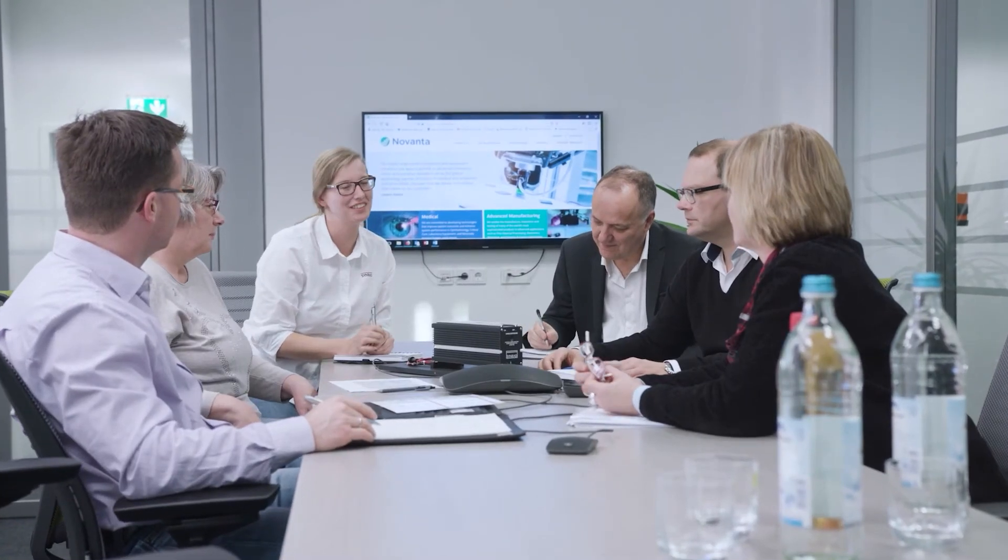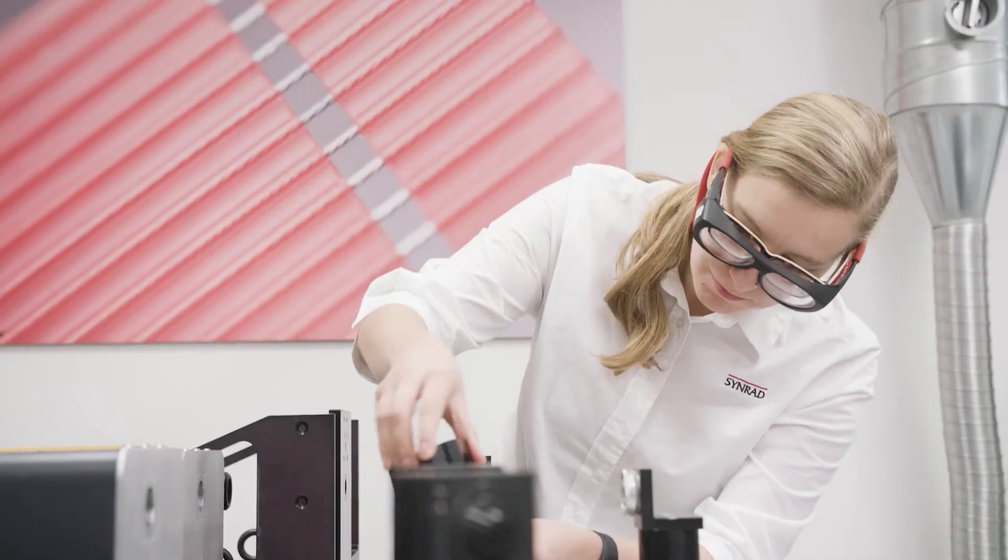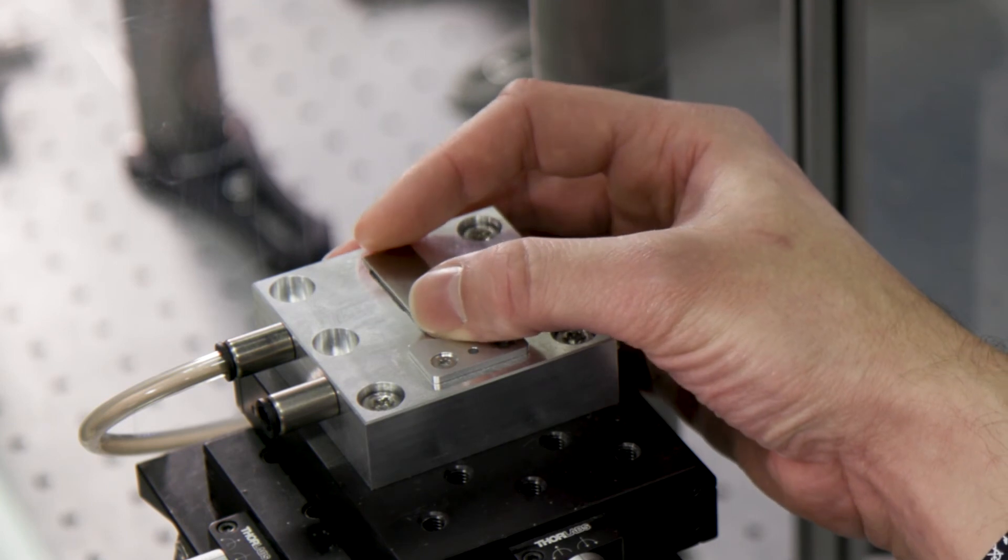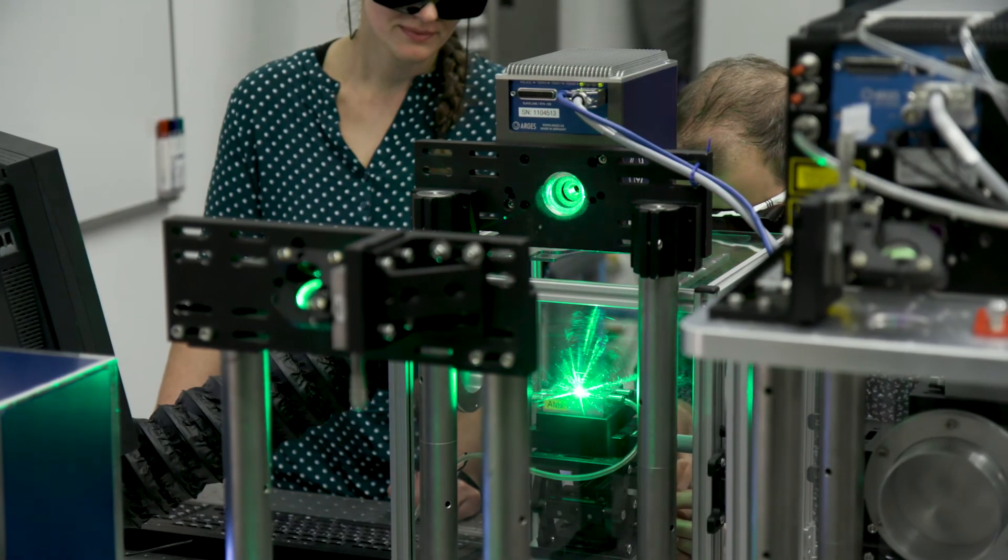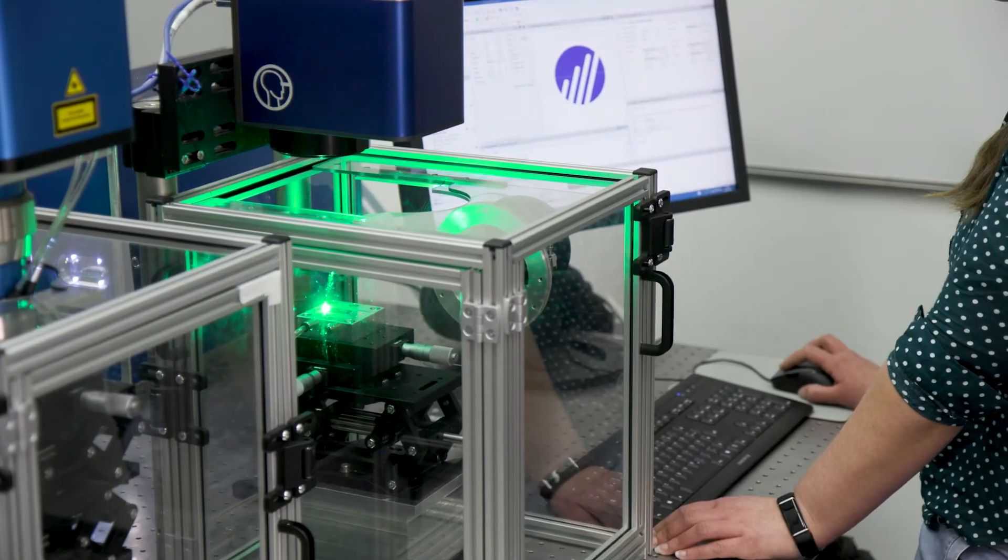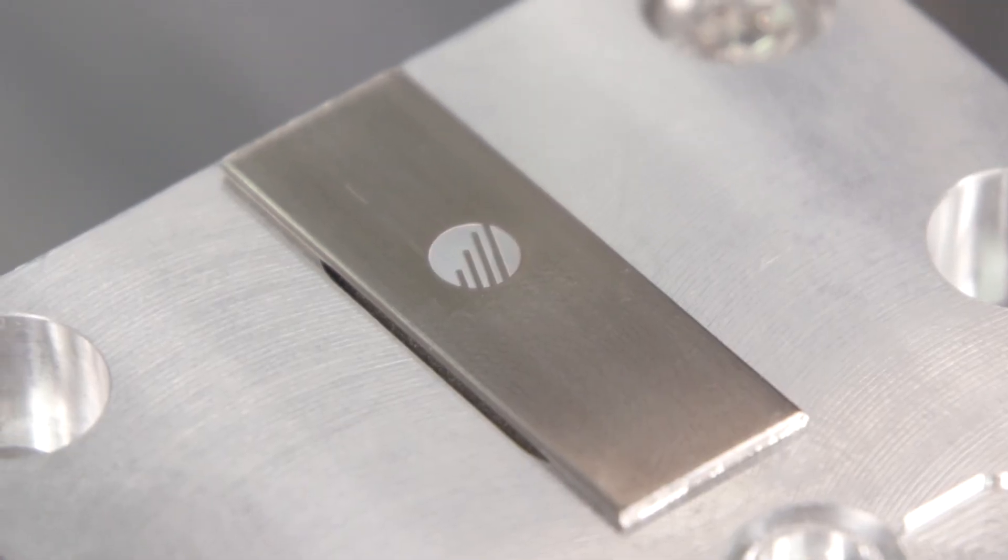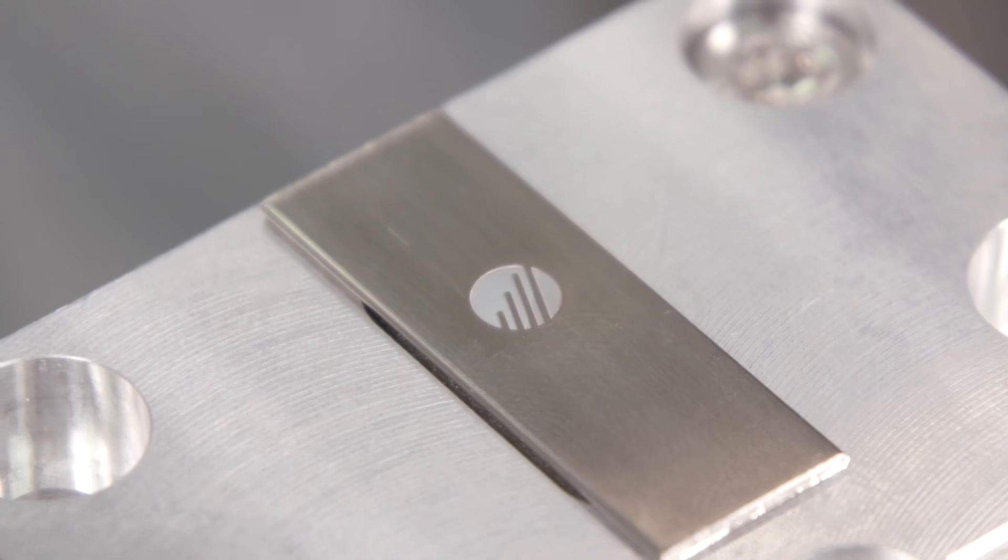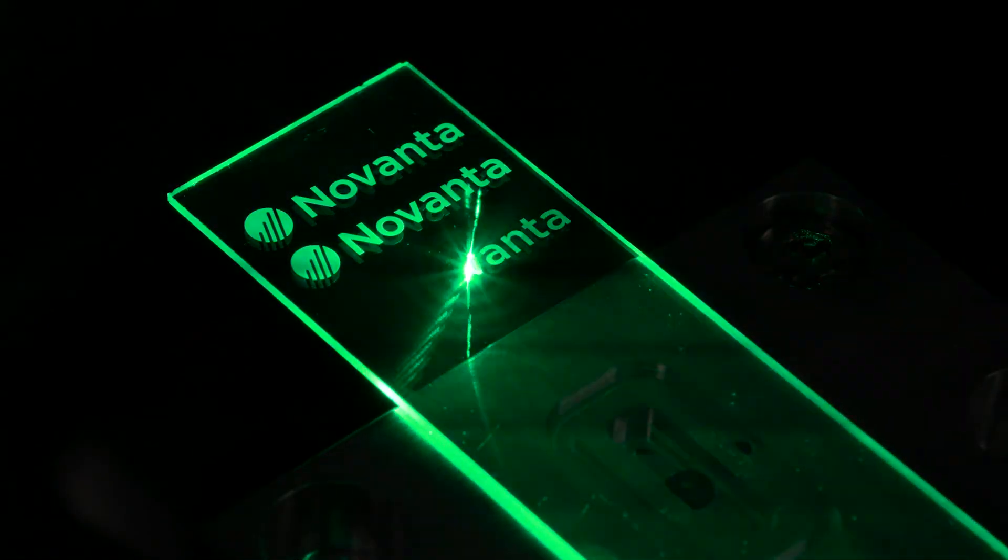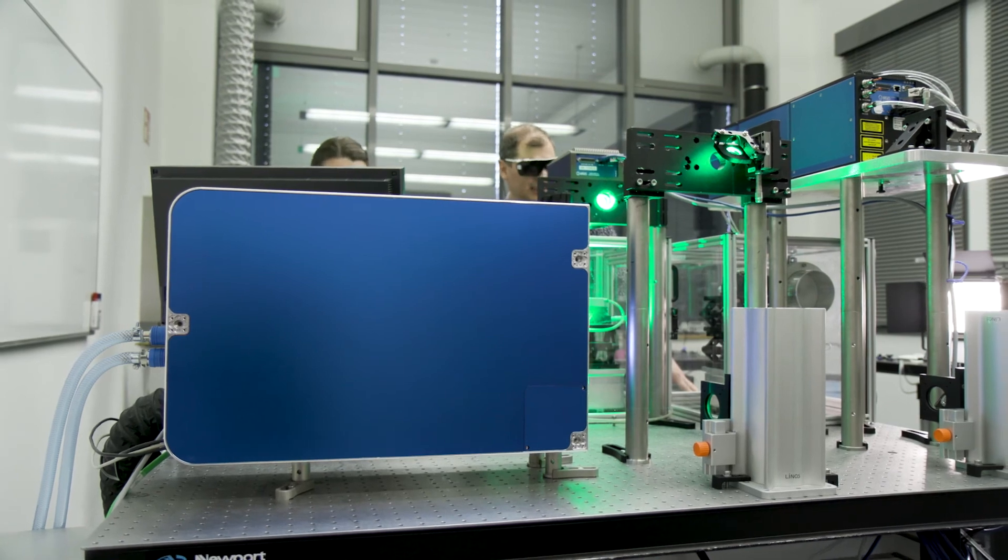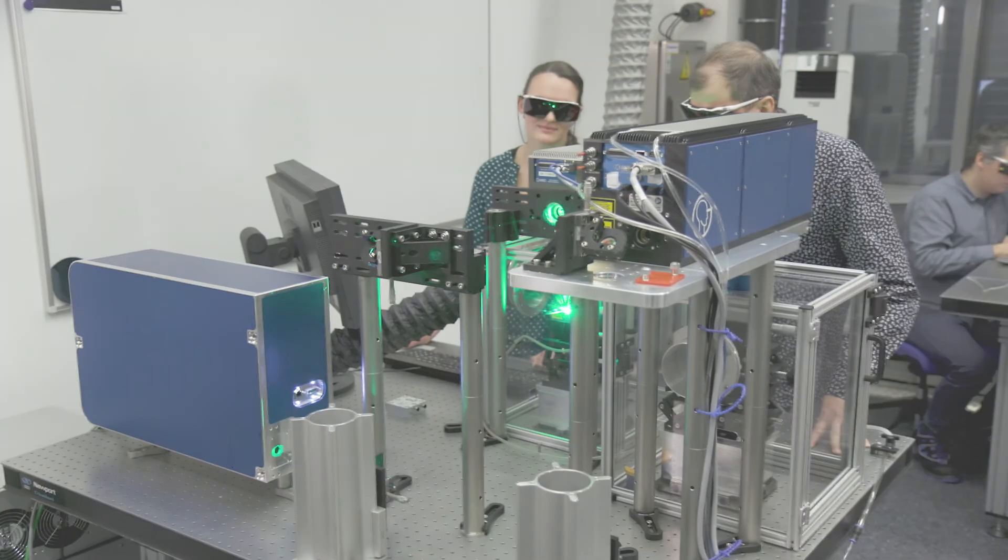At Novanta, we collaborate engineer to engineer to tailor our solutions to our customers' applications. We can provide complete subsystems focused on our customers' specific requirements. Our subsystem solutions are suitable for a wide range of material processing applications, which require high-quality and high-throughput. We achieve this fine balance with the DART and matched scan head to achieve customer specifications across many applications.